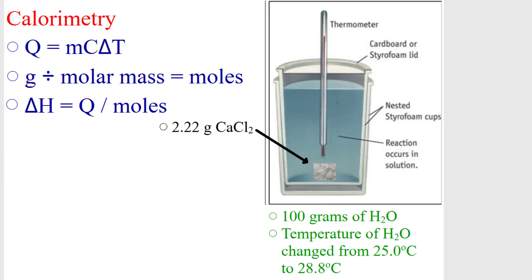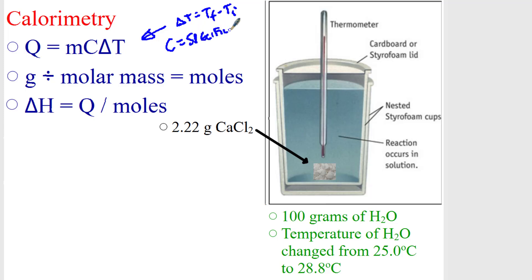Last but not least is calorimetry. Calorimetry uses the equation Q equals MC delta T. Q is heat, M is mass, delta T is the change in temperature — final temperature minus initial temperature. And C is called your specific heat, which is how much heat is going to be absorbed or released for every one degree Celsius and for every one gram. We have grams divided by molar mass to give you moles. Delta H equals Q divided by moles, so we're in joules per mole or kilojoules per mole.